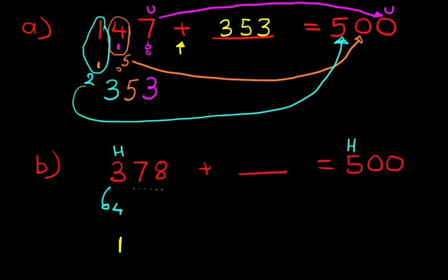How about the tens? We've got 7. Now, again, we don't want to get the 7 to equal the 0, in other words, 10. We want the 7 to become 9. Now, to become 9, we have to add 2.